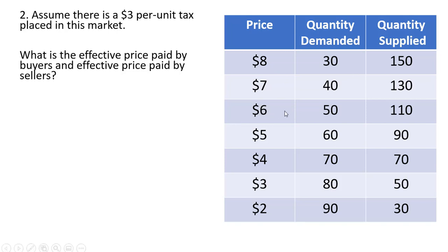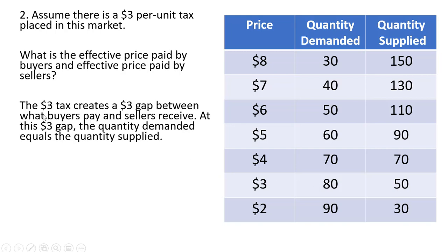It looks like this gap between $6 and $3 is $3. At $6, consumers want to buy 50 units. At $3, sellers are willing to sell 50 units. So that is our new equilibrium in the face of the tax. You'll notice other $3 gaps will not lead to an equilibrium — if buyers were paying $8 and sellers receiving $5, quantity demanded would be well less than quantity supplied. Or if buyers were paying $5 and sellers receiving $2, quantity demanded would exceed quantity supplied. So only at a buyer price of $6 and seller price of $3 do we get the $3 gap where quantity demanded equals quantity supplied.